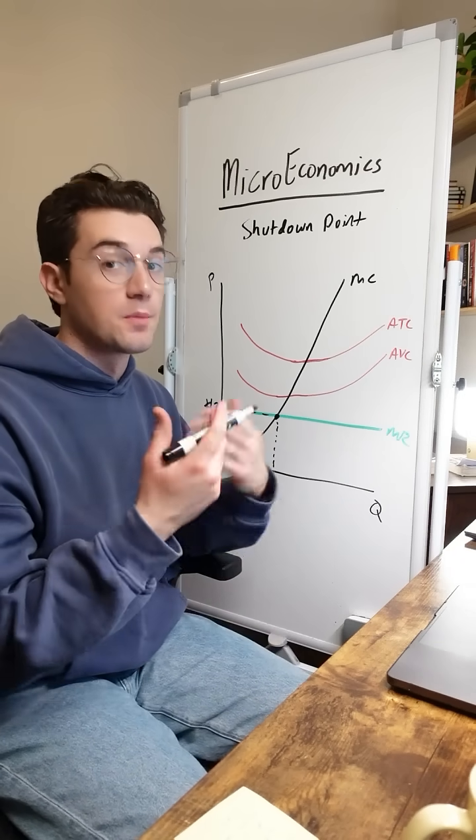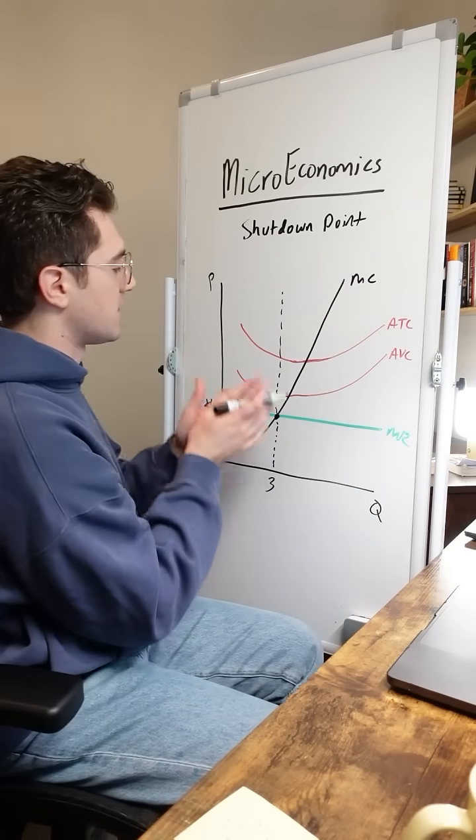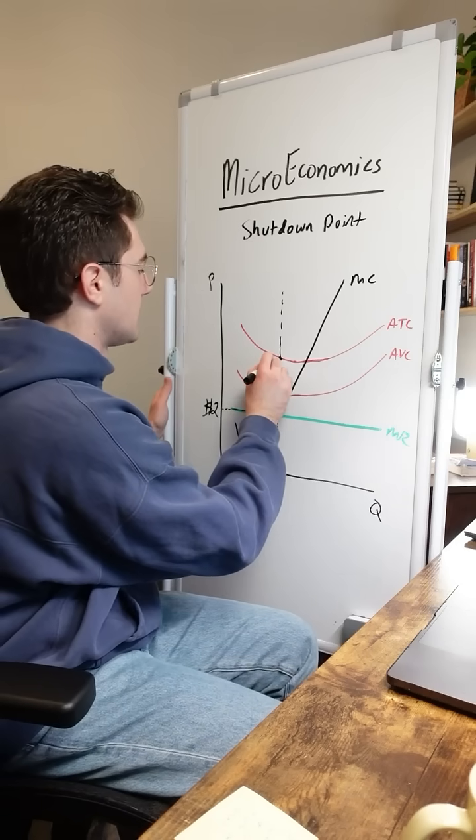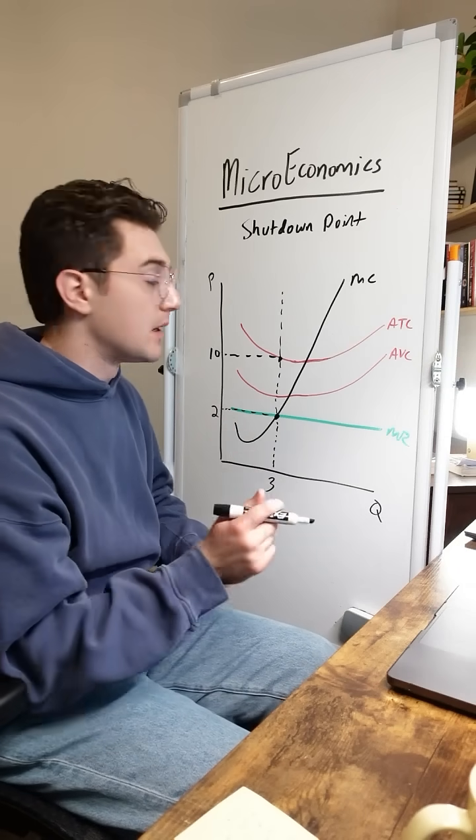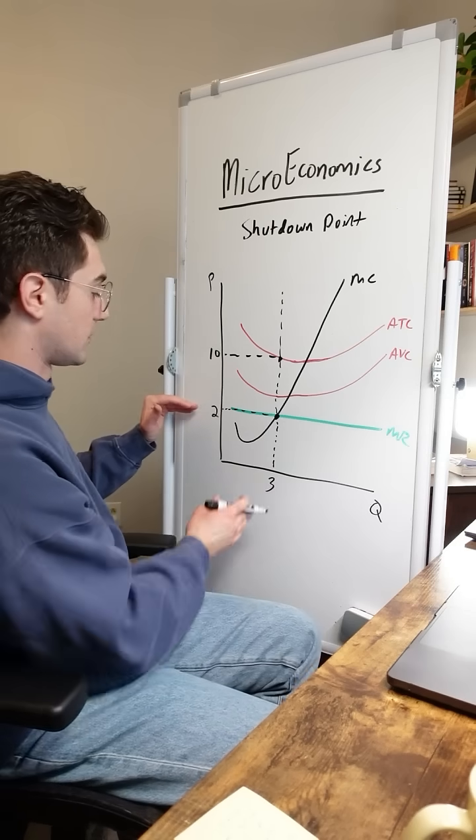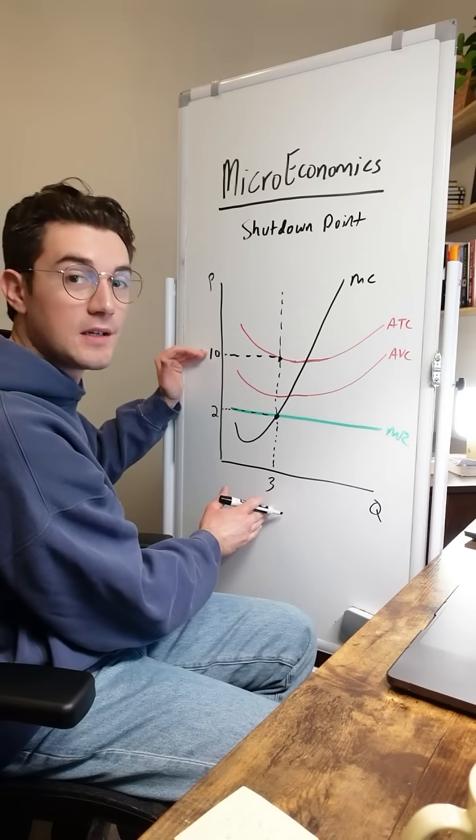Now from here, if we want to determine the profit that they're generating, remember we'd go vertically from here and see where we intersect the ATC curve. That happens right here at, we'll say, $10. So at its profit maximizing point, this firm is already going to be generating a loss. They're selling three units at two bucks a pop, but the average total cost of each unit is $10.